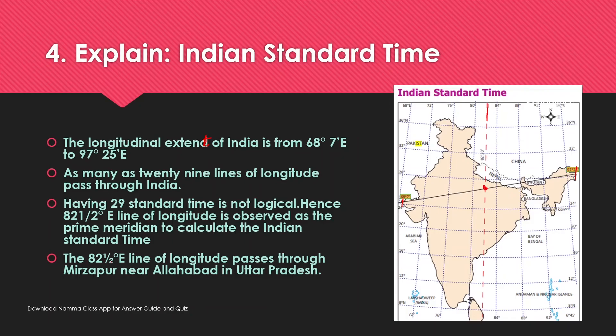The 82.5 degree east line of longitude passes through Mirzapur near Allahabad in Uttar Pradesh.